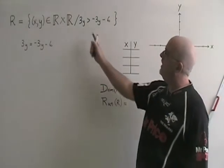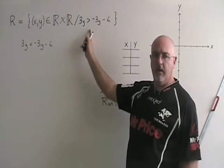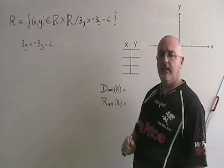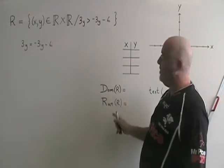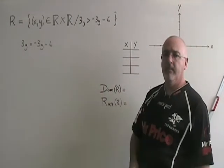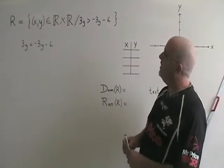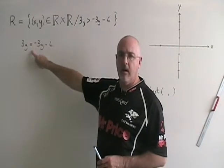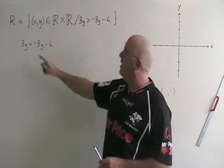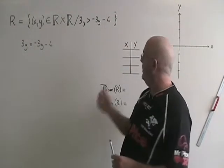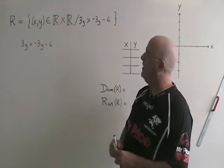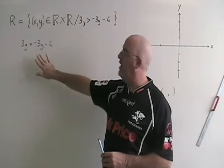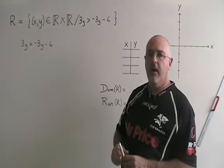In this question, we are given a linear inequality in set builder notation, and we are asked to graph it and then give the domain and the range. First, I'm going to write my inequality with an equal sign, and then I'm going to isolate my y so that I can fill in my table of values. There is no x in this equation, so I know it's going to be a horizontal line.